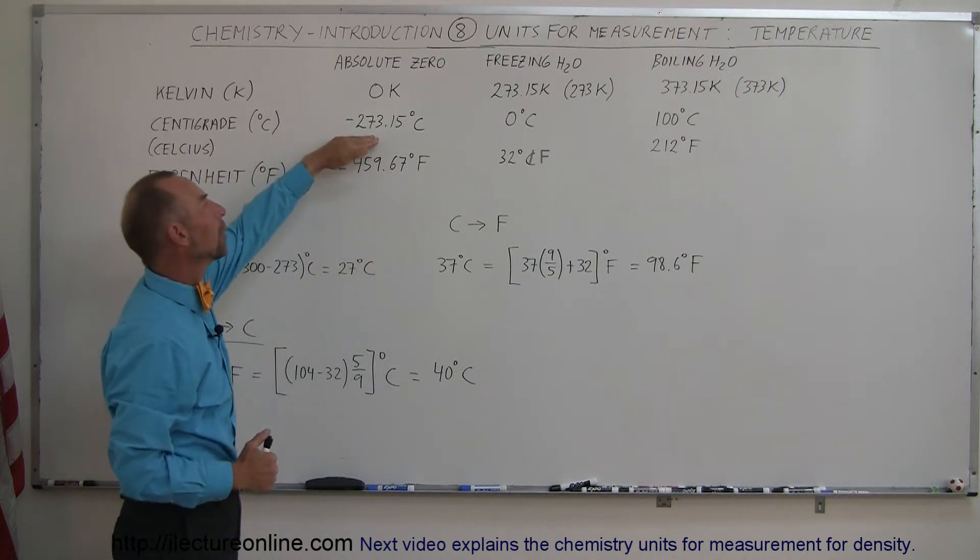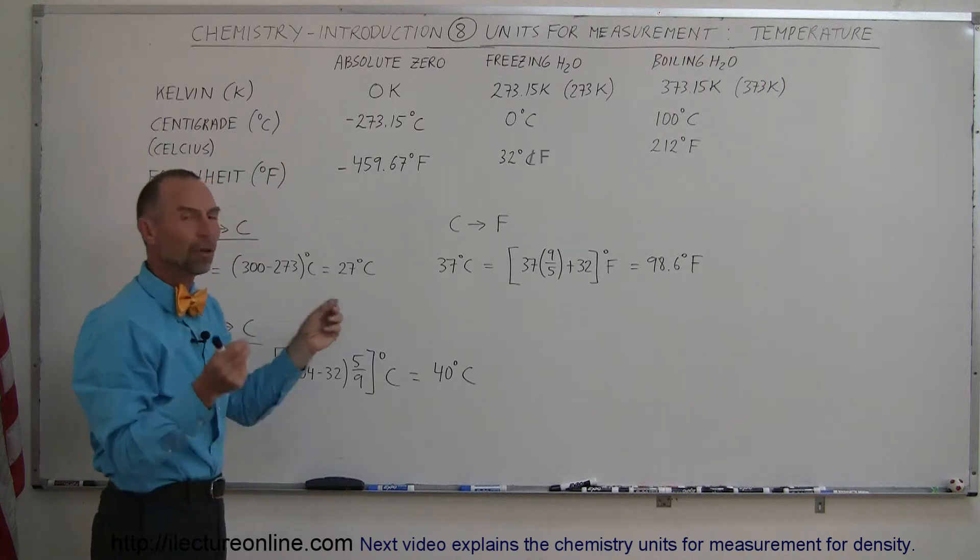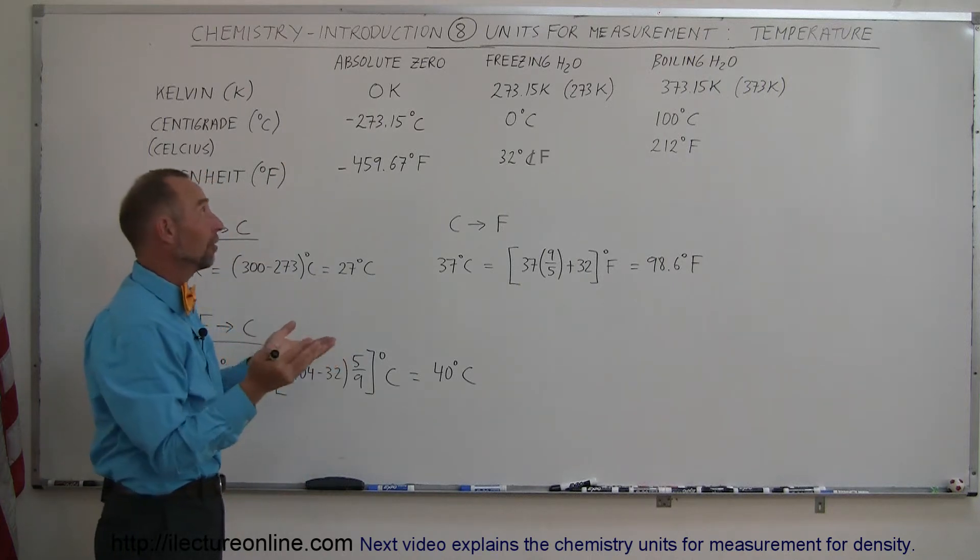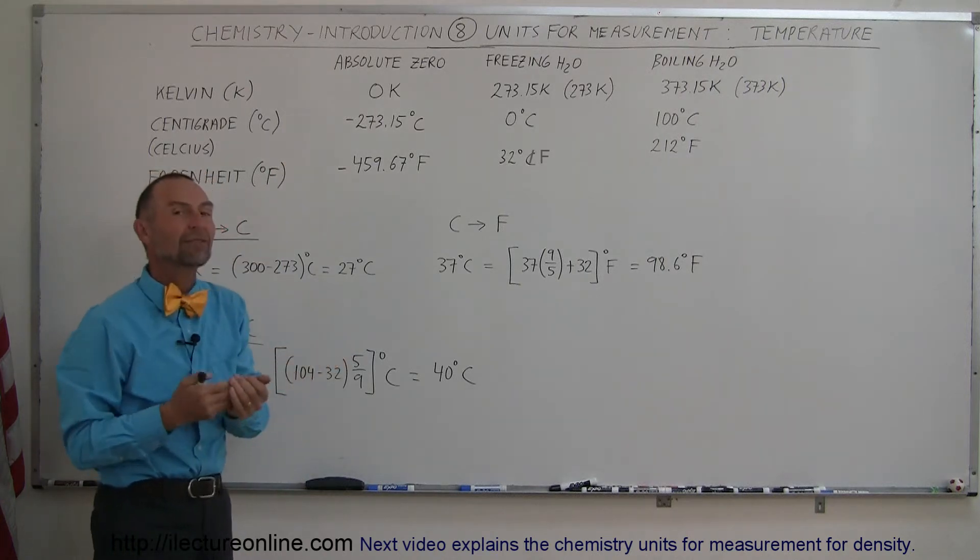You reach the coldest it can ever be, and we call that the zero scale in Kelvin. So they simply differ by 273.15 degrees.